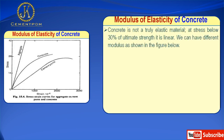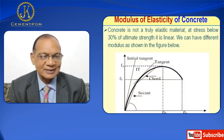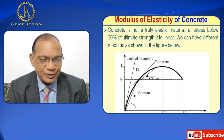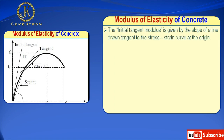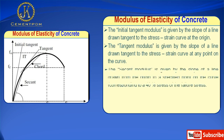Concrete is not a truly elastic material. At stress below 30% of ultimate strength, it is linear. We can have different moduli as shown in the figure in the video. The initial tangent modulus is given by the slope of a line drawn tangent to the stress-strain curve at the origin. The tangent modulus is given by the slope of a line drawn tangent to the stress-strain curve at any point on the curve.